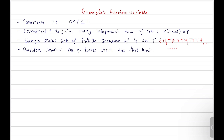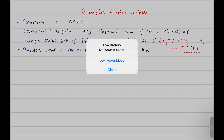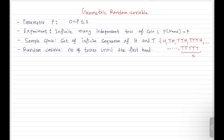One possible outcome would be: you toss the coin, get tail, tail, tail, tail, tail, and after that you get the head. So our sample space will have an infinite number of such elements because there are infinite possible outcomes. This is our sample space.